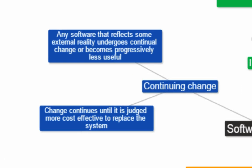Software evolves because of continuing change, including change in the industry, changes in users' needs, and changes in regulations and standards. Any software that reflects some external reality undergoes continual change or becomes progressively less useful. New features may be required by the user and so software will need to change. Change continues until it is judged more cost-effective to replace the system.